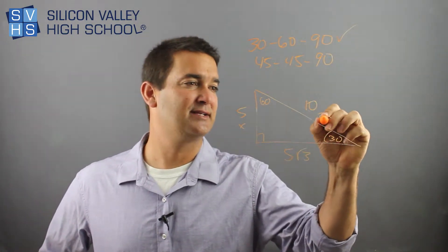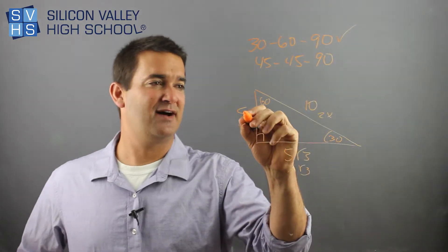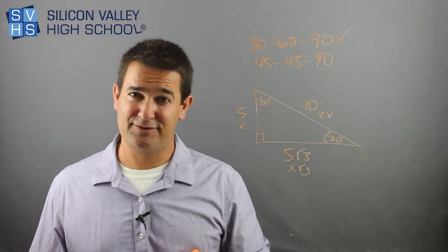So remember, it was x, 2x, and x root 3. So if x is 5, well then that would be 10, and that's 5 root 3.